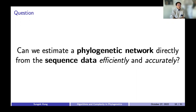This leads to the main question of my doctoral dissertation: can we estimate a phylogenetic network directly from sequence data efficiently and accurately? The short answer is yes — we can do that by combining the composite likelihood framework, sometimes referred to as the pseudo-likelihood framework, with the site pattern frequency data that can be extracted from the alignment.